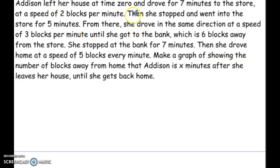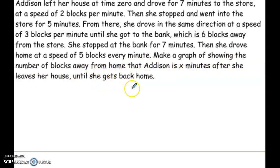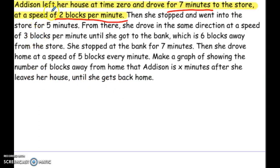Addison left the house at time zero and drove for seven minutes to the store at a speed of two blocks per minute. Then she stopped and went to the store for five minutes. From there, she drove the same direction at a speed of three blocks per minute until she got to the bank, which is six blocks away from the store. She stopped at the bank for seven minutes, then drove home at a speed of five blocks every minute. Make a graph showing the number of blocks away from home that Addison is X minutes after she leaves her house until she gets back home.